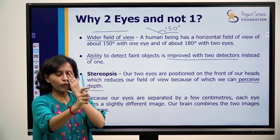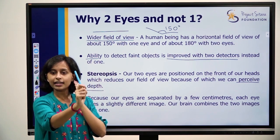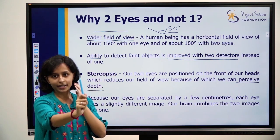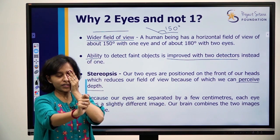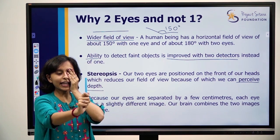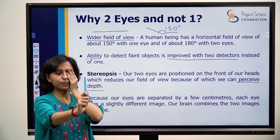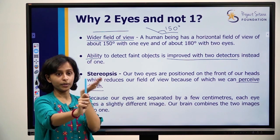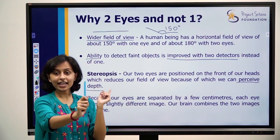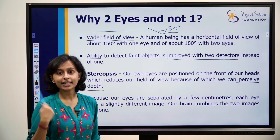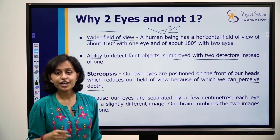Do this — at one position, close one eye and see where the pen is. Then open that eye and close the other one. You will see that the object appears to shift position.